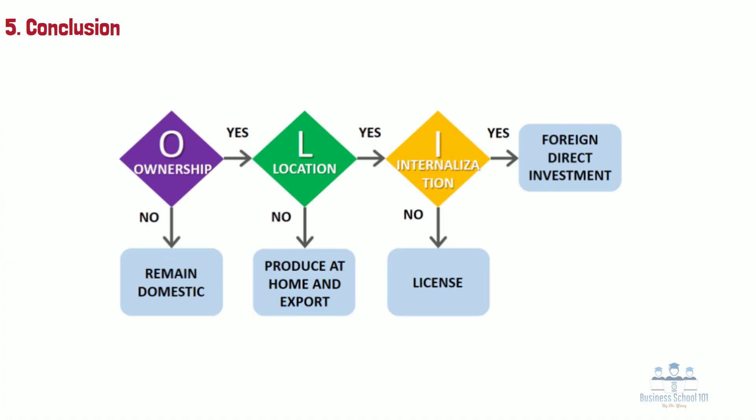Section 5: Conclusion. The OLI framework, or the eclectic paradigm, is a three-tiered evaluation framework that companies can follow when attempting to determine if it is beneficial to pursue foreign direct investment. According to this paradigm, a company needs all three advantages to be able to successfully engage in foreign direct investment. If one or more of these advantages are not present, the focal company might want to use a different entry mode strategy.